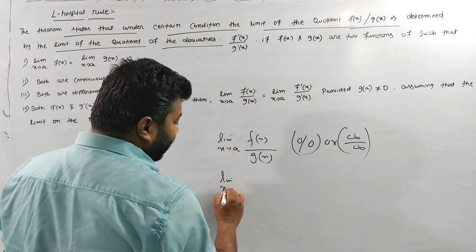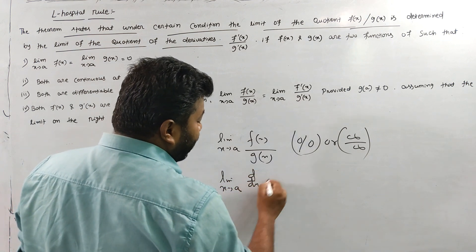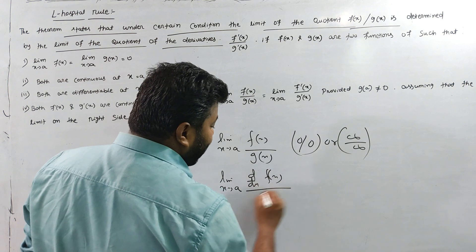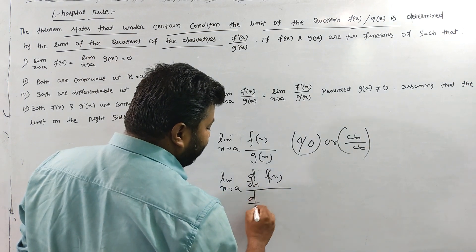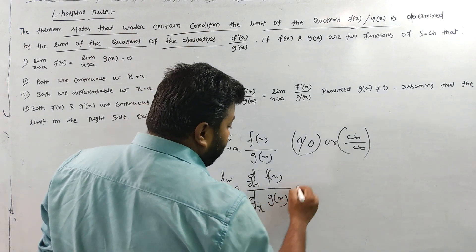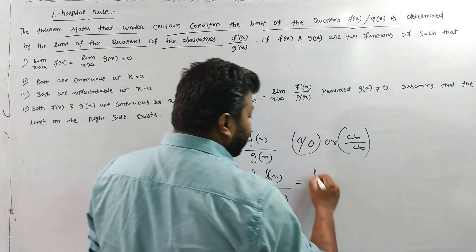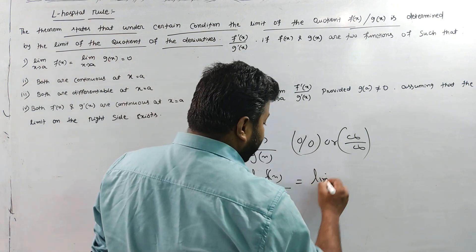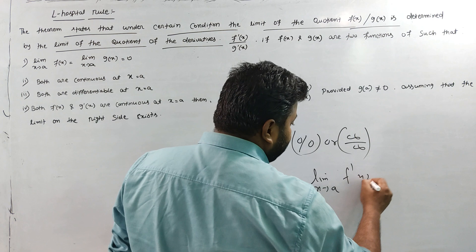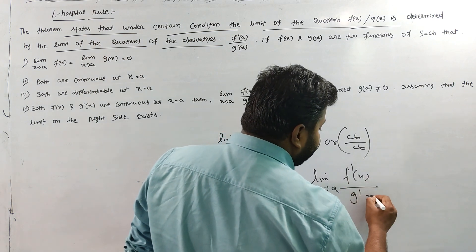Specifically, the rule gives us: the limit as x tends to a of f(x)/g(x) equals the limit as x tends to a of f'(x)/g'(x), where f'(x) and g'(x) are the derivatives.